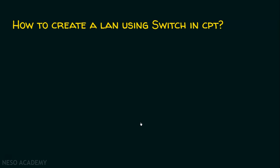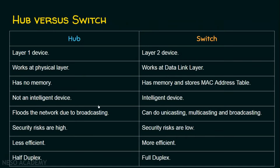It is always good to know the difference between a hub and a switch. A hub is a layer 1 device — it works at the physical layer — whereas a switch is a layer 2 device that works at the data link layer. Hub has no memory so there is no MAC address table, whereas switch has memory and stores the MAC address table. Hub is not an intelligent device whereas switch is an intelligent device. Hub always floods the network due to its broadcasting behavior, whereas switch can do unicasting, multicasting, and broadcasting based on need.